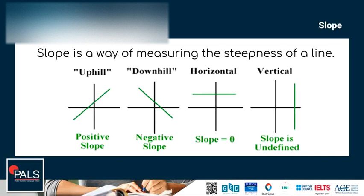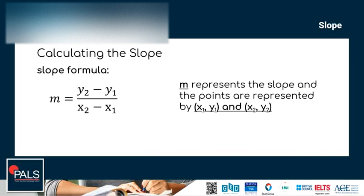To calculate the slope, we can use the formula M equals y sub 2 minus y sub 1, all over x sub 2 minus x sub 1. M represents the slope, and the points are represented by x sub 1 and y sub 1, and x sub 2 and y sub 2.